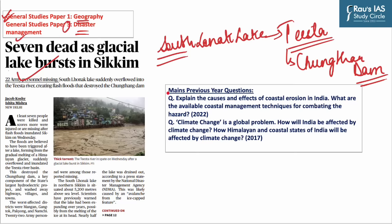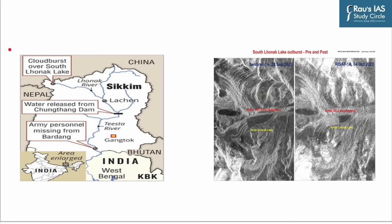On similar lines, a question appeared in 2022 asking to explain the causes and effects of coastal erosion in India and available coastal management techniques. In 2017, the question related to climate change and its impact on Himalayan and coastal states. First, let us look at the location of the disaster.